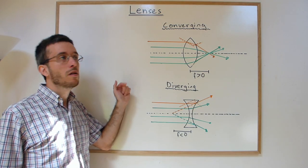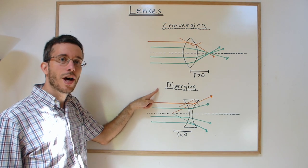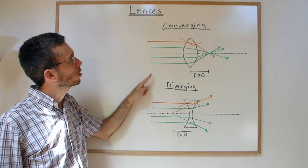There are two main types of lenses: one is a converging lens and one is a diverging lens. How does this work?